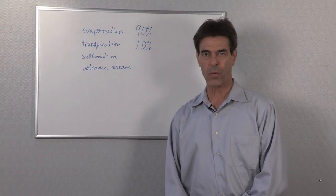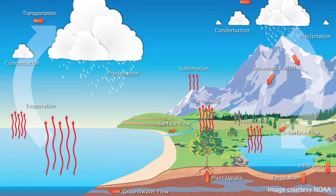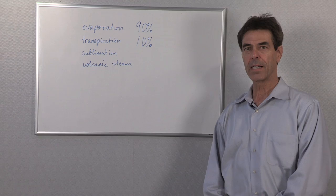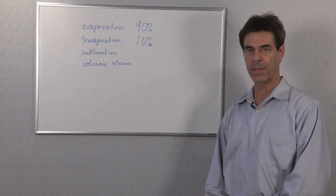The main sources of water in the atmosphere come from evaporation. This is water which is evaporating from oceans, seas, lakes, streams, any body of water. That accounts for 90% of the water entering the atmosphere.